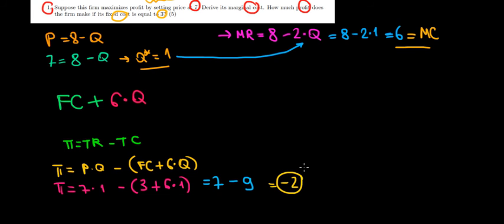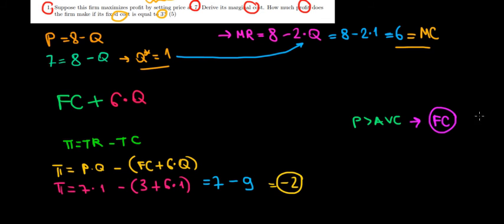Let's check whether it makes sense for the firm to stay in the market despite the negative profit. We know the property that it's worth staying as long as the price recovers the average variable cost. As long as the price is above the average variable cost, we're making some markup above the variable cost, which gives us enough money to eventually cover the fixed cost and achieve positive profits in the long run. So even with negative short-run profits, it may be worth staying in the market.